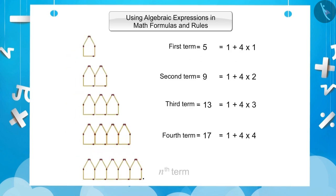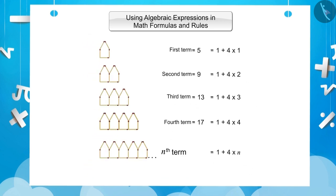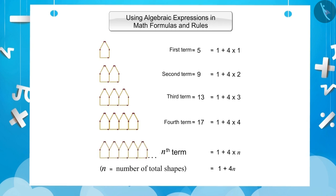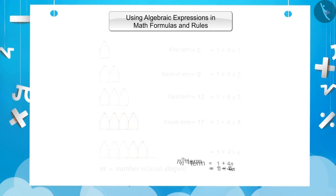Similarly, the nth term will be 1 plus 4 multiplied by n. Thus, if we want to find the total number of math sticks to build n huts, then the rule will be 1 plus 4n. Here, n represents the number of total shapes that are in the form of a hut. So we can find the total number of math sticks by placing the value of n in this expression.